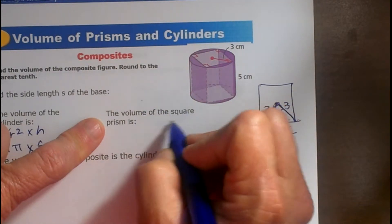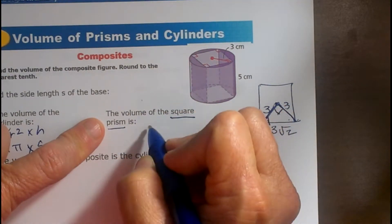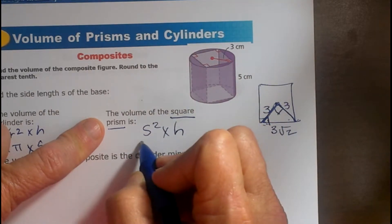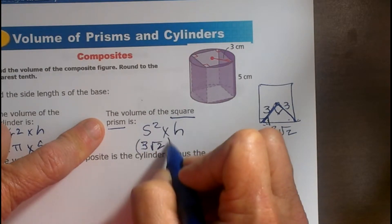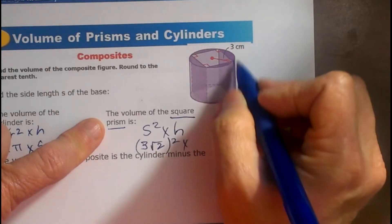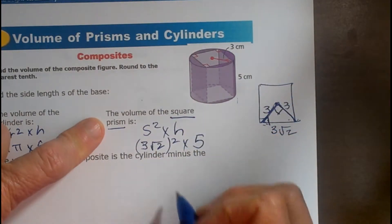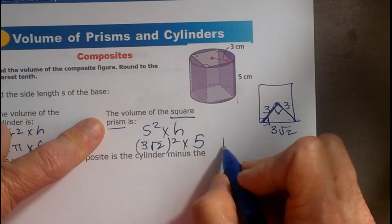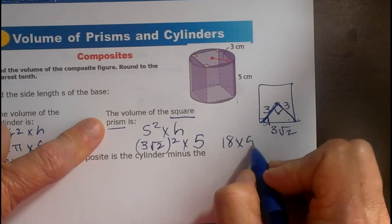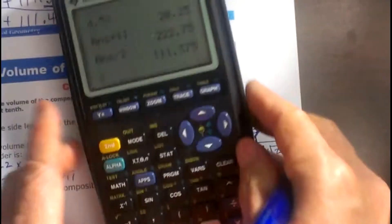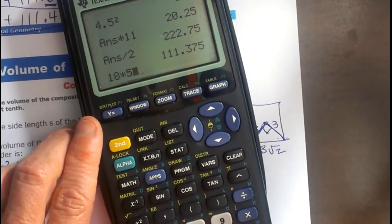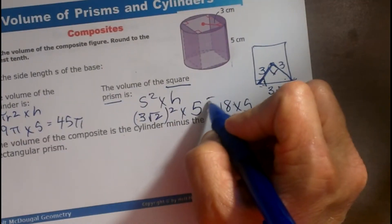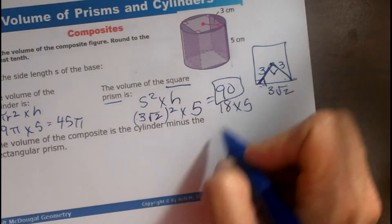So let's see. The volume of our square prism is going to be base area, which is side squared times the height. And then my side is 3 root 2 squared times the height, well the height is still 5. And so 3 squared is 9, and the square root of 2 squared is just 2, so that is going to give me 18 times 5, what is 18 times 5, gives me 90, so that is going to be 90. So the volume of that square prism is 90.